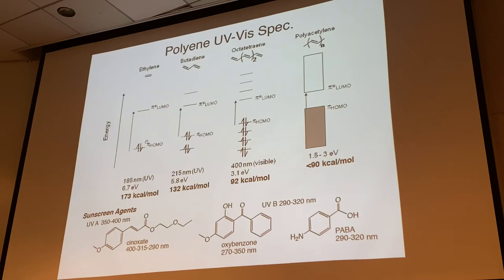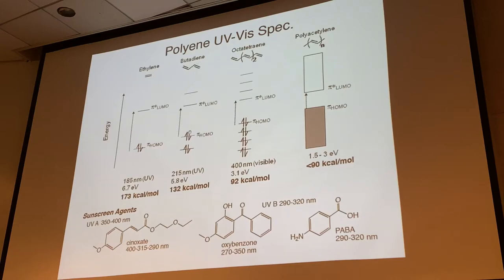The energy gap for ethylene is quite significant - 173 kcal/mol. For butadiene, we have four molecular orbitals from four atomic orbitals and four electrons in the pi system. The gap is significantly smaller: 132 kcal/mol for a lambda max of 215 nm - still in the UV. Going to octa-tetraene and further to carotene and lycopene, the lambda maxes reach about 400 nm, definitely in the visible range.